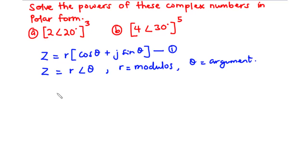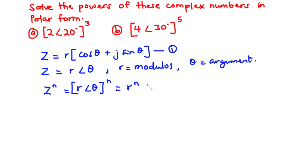Now, according to De Moivre's theorem, z exponent n is equal to r polar theta all exponent n. And this can be simplified as r exponent n polar n times theta. So basically, if you have r polar theta all exponent n, then you raise r to the power n and multiply n by the angle theta.